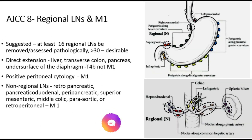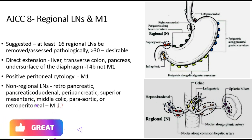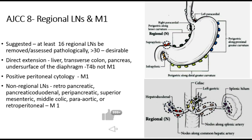Regarding the classification of regional lymph nodes as per AJCC-8, in the latest edition of the American Joint Committee on Cancer, it is recommended that at least 16 regional lymph nodes be removed or assessed pathologically, and more than 30 are desirable for complete pathological assessment for carcinoma stomach. Direct extension into the liver, transverse colon, pancreas, or undersurface of the diaphragm is classified as T4b, not M1.